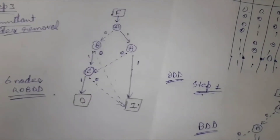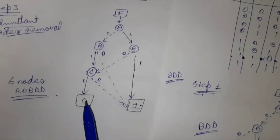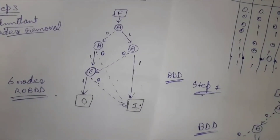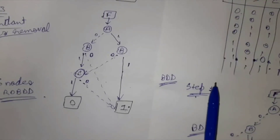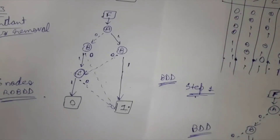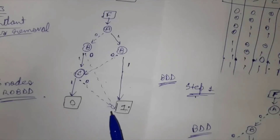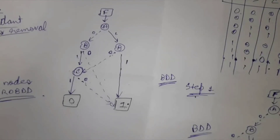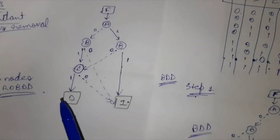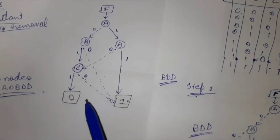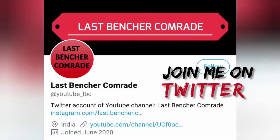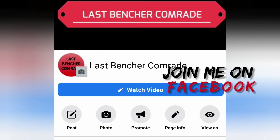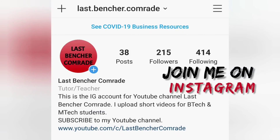If you are doubtful whether the ROBDD you have constructed is giving the correct values or not, you can use this method and you will know whether the truth table aligns with the logic function. This is the sure-shot method of cross-checking our ROBDD diagram against the truth table. Do join me on Twitter, Facebook and Instagram — the handles are given in the video description.